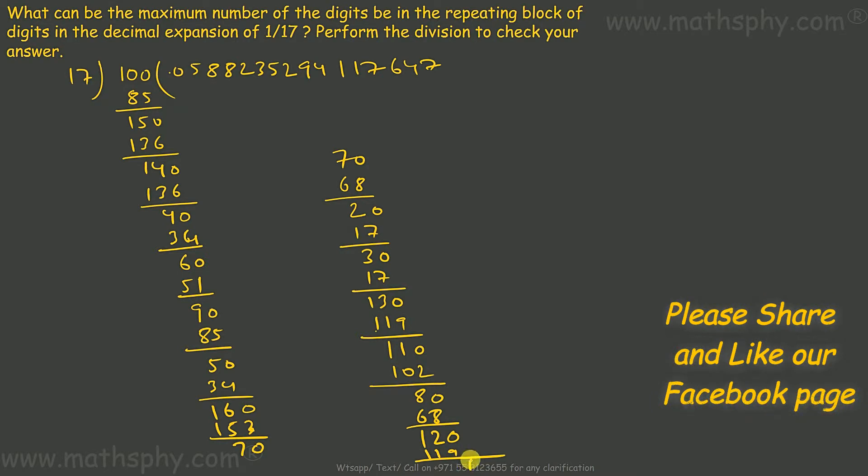Now you see we have got a remainder which is 1, and we actually started from 1. So now you see, if I start dividing this 1 by 17, I'll start repeating these numbers.